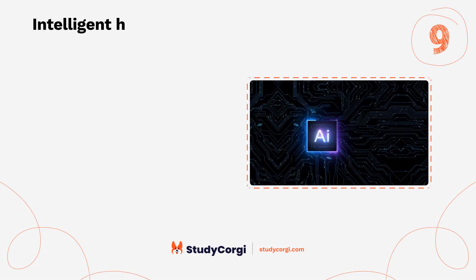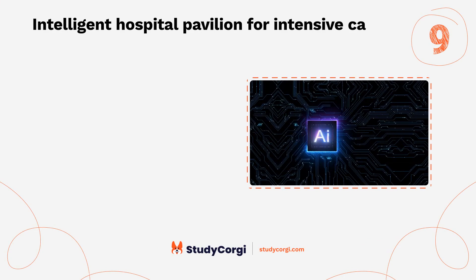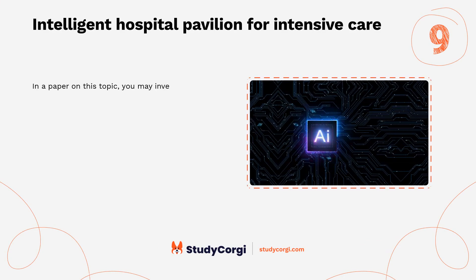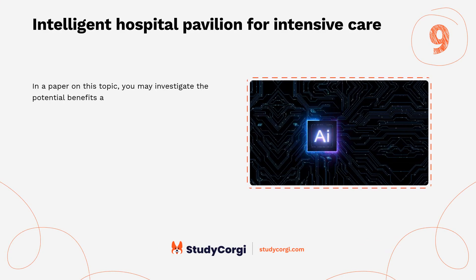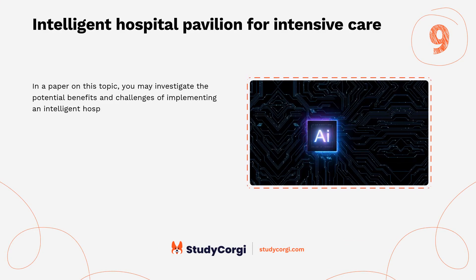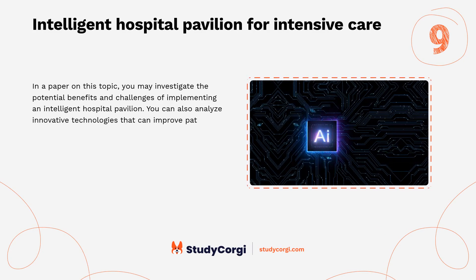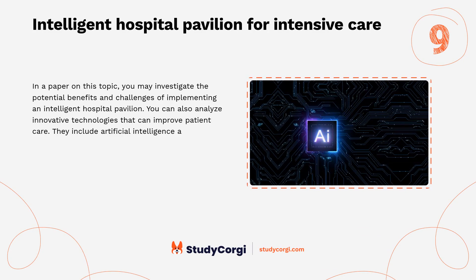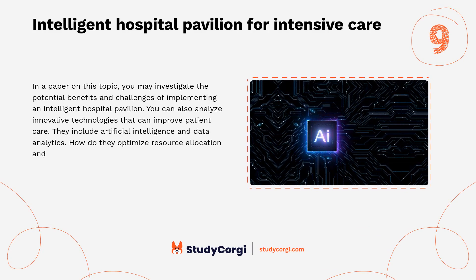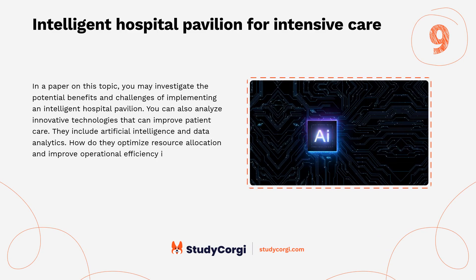Intelligent Hospital Pavilion for Intensive Care. In a paper on this topic, you may investigate the potential benefits and challenges of implementing an intelligent hospital pavilion. You can also analyze innovative technologies that can improve patient care — they include artificial intelligence and data analytics. How do they optimize resource allocation and improve operational efficiency in the ICU?